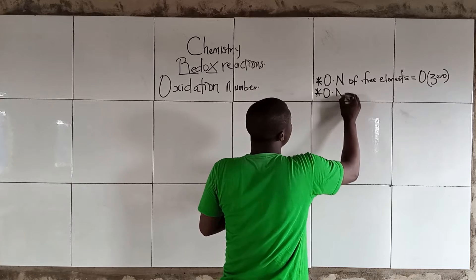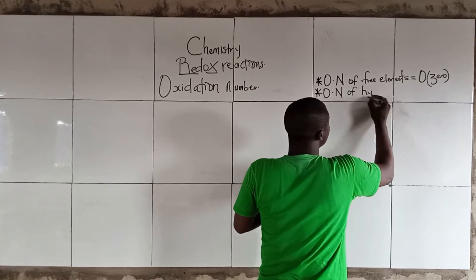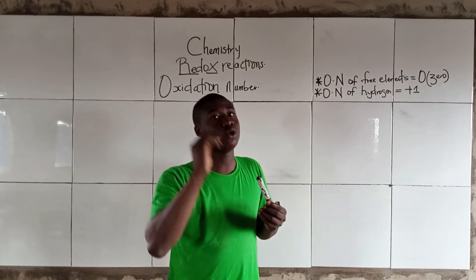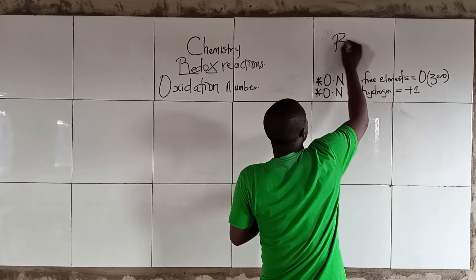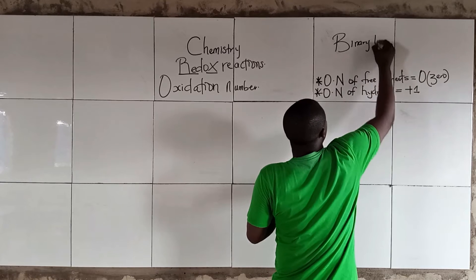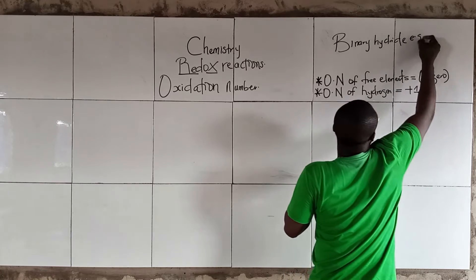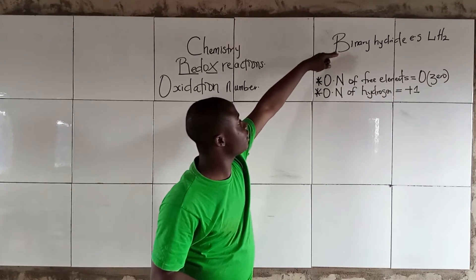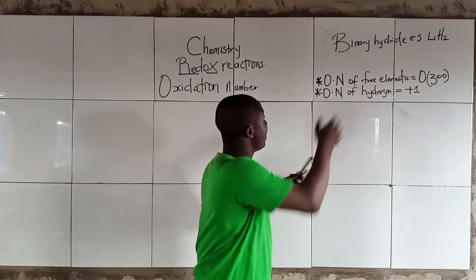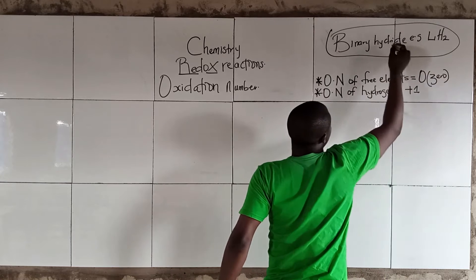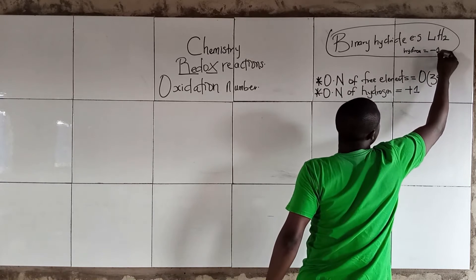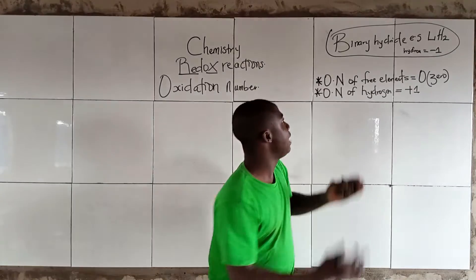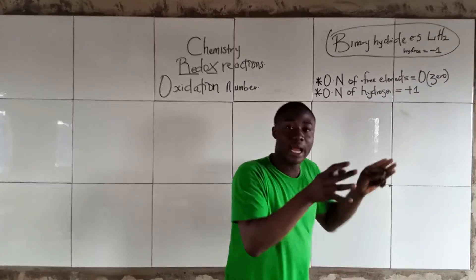The oxidation number of hydrogen is positive one, with the exception of binary hydrides — like lithium hydride. So, what would be the oxidation state of hydrogen in binary hydrides? Hydrogen in binary hydrides is simply negative one. But generally, the oxidation number of hydrogen is positive one; in binary hydrides, it is negative one. So binary hydrides are the exception.